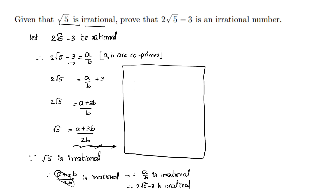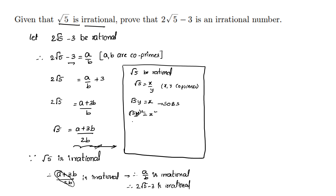Let root 5 be rational. So root 5 is equal to some x by y, where x and y are co-primes. So root 5·y is equal to x. Squaring on both sides, 5y² is equal to x². So therefore x is a multiple of 5. If x is a multiple of 5, x can be written as 5z.